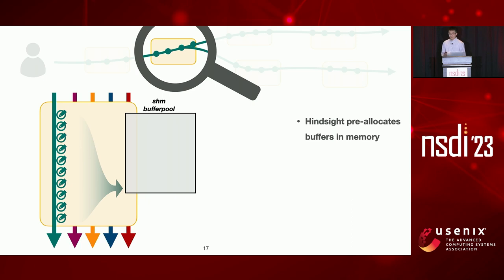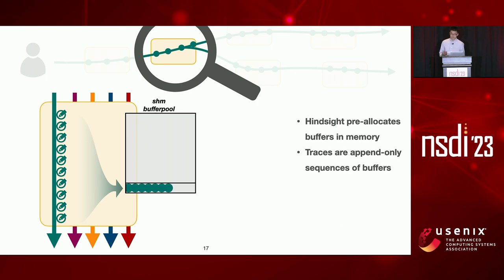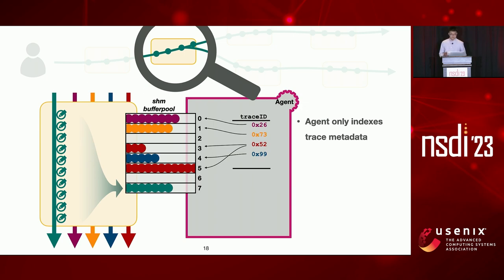Let's look at Hindsight's control and data plane. Hindsight pre-allocates a buffer pool in shared memory on each system component. All buffers are fixed-sized at a few kilobytes and are identified by their offset in shared memory. With just a buffer ID, the client knows where to write data directly into memory. A trace is represented as an append-only sequence of these buffers, each containing raw trace data. No two requests share a buffer, so no further buffer management is needed. A separate agent process runs alongside the application; the agent doesn't touch the trace data but only indexes metadata — maintaining which request used which buffers. Even if a request generates a lot of data, it can be concisely represented by the IDs of its buffers.